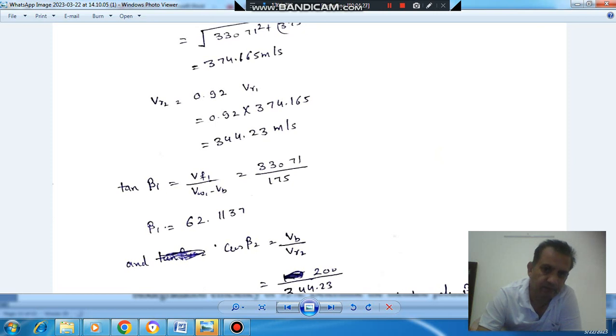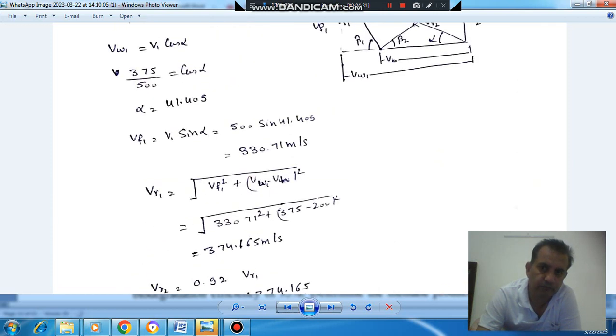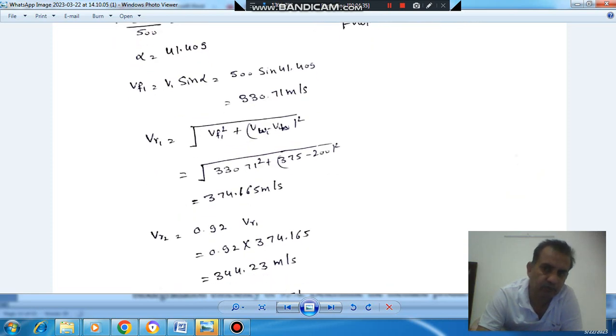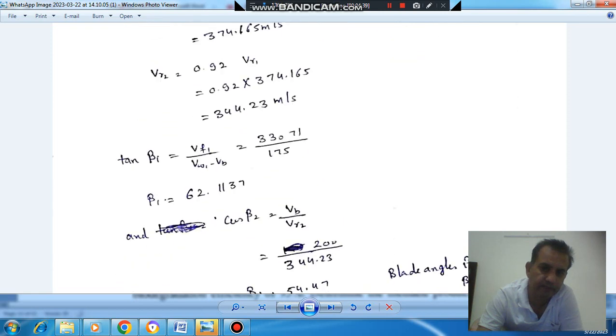VW1 minus blade velocity, VF is also same at inlet or outlet. And VR2 also from this VF and VR2 we can find out beta 2. So that is blade angle at exit. So that is 54.4°.